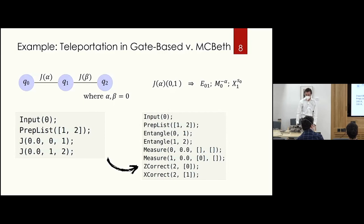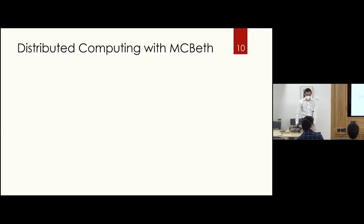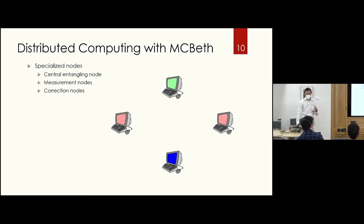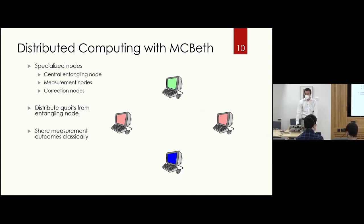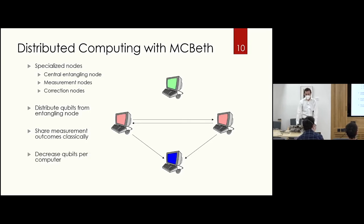Another benefit is scalability. With MACBETH you can construct distributed programs with specialized nodes: entangling nodes, measurement nodes, and correction nodes. You distribute the compute qubits from a central entangling node, share measurement outcomes classically among the remaining computers, and this decreases the number of qubits per computer. If you have a 100-qubit computation you can distribute it across 10 computers each handling 10 qubits, or even one qubit per computer, enabling scalable quantum computing.